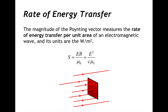If we were to calculate the magnitude of the Poynting vector, we would get the rate of energy transfer per unit area, which is in units of watts per meter squared. That magnitude is equal to the product of the magnitudes of the electric and magnetic fields over the permeability of free space.